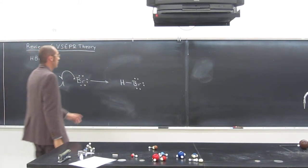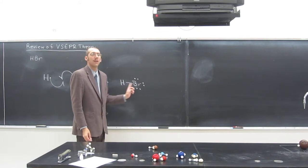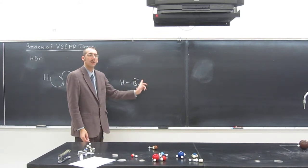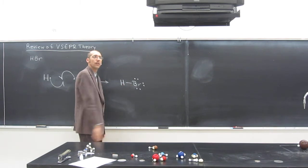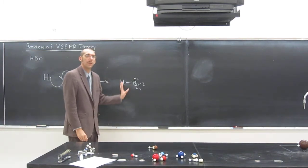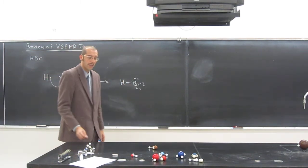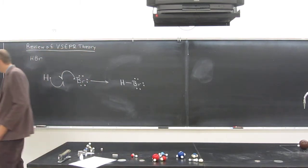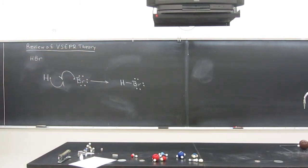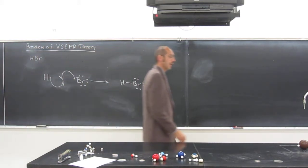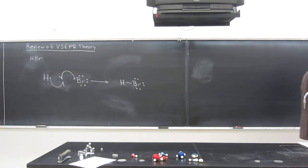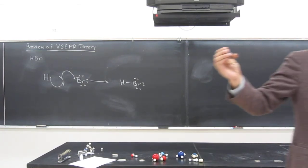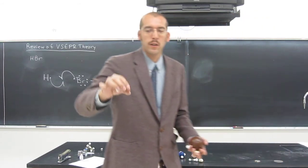So notice, both of these atoms have their valence shell totally filled, right? Because they're sharing these two electrons in there. Is everybody okay with that? So again, just like what we were doing earlier, we were showing the skeletal structure. So we can see something like HBr here. Is the skeletal structure moving on?